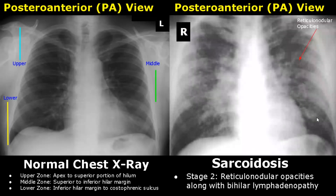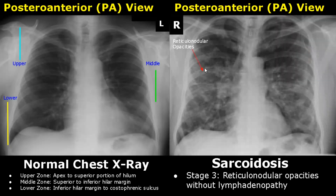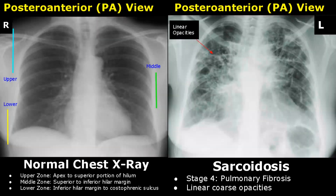In stage 2 sarcoidosis, reticulonodular opacities are found along with bilaterally enlarged hilar lymph nodes. The reticulonodular opacities contain both round areas as well as linear opacities. In stage 3 sarcoidosis, we will not see enlarged lymph nodes — only reticulonodular opacities throughout both lungs. Stage 4 is the final stage; the x-ray shows numerous coarse linear opacities in both lungs, which is a sign of pulmonary fibrosis.